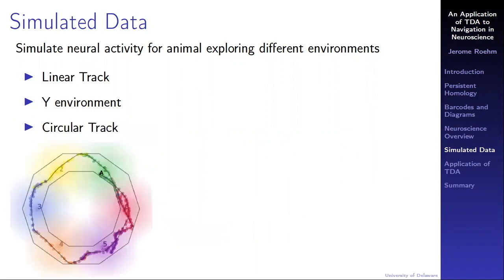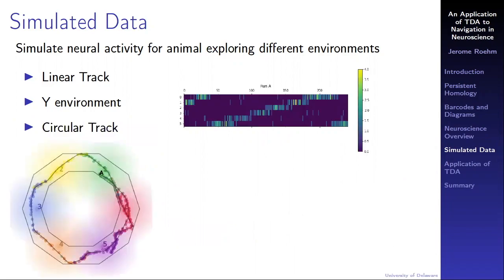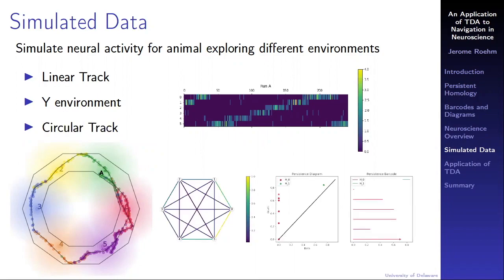Next, I simulated data for a circular track. On this run, the animal loops around the track, generating the firing data shown. This time, when we construct the weighted correlation graph and compute the persistent homology, a one dimensional cycle does form.